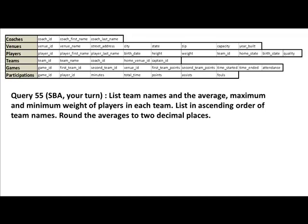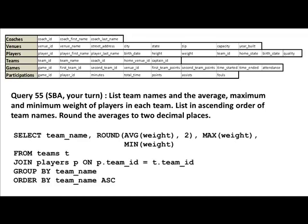Pause the video, get your answer, try it out, then come back. I'm sure you got this as your query: select team name, then round the average weight to two decimal places as average weight, maximum weight, minimum weight. In fact, I should have rounded all of them — I rounded only the average weight. I should have also said round minimum weight comma two, round maximum weight comma two.